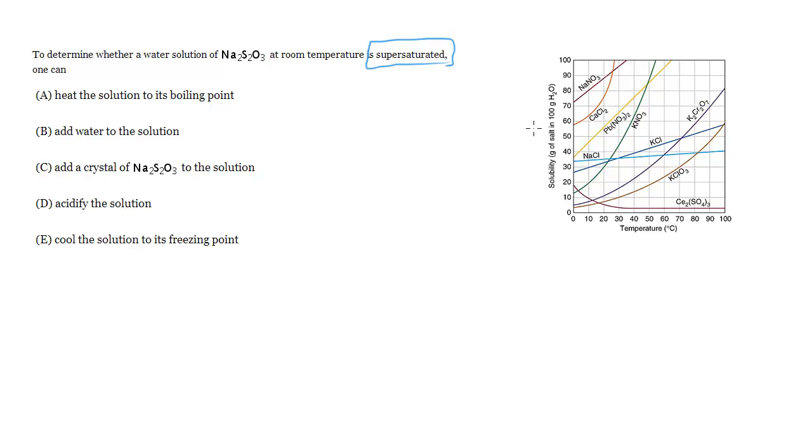So here is a table of, it's a solubility curve table, or graph I should say. And it shows what is the solubility or how many grams per hundred grams of water can dissolve of these particular compounds at given temperatures of water. And as you can see, for most of these, as temperature goes up, solubility increases and that's a general trend for solid solutes.